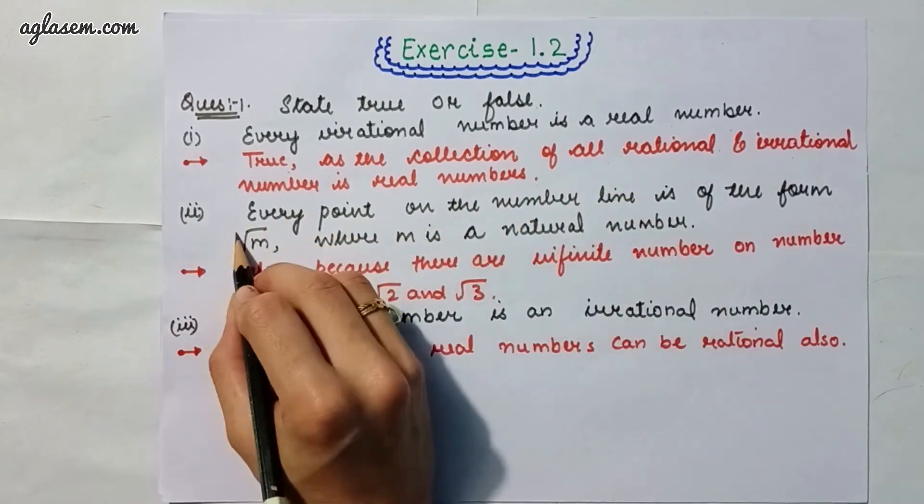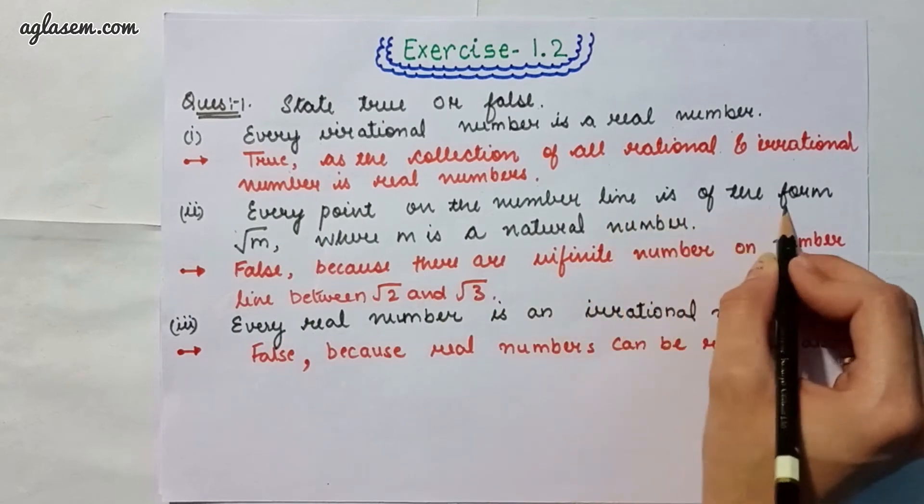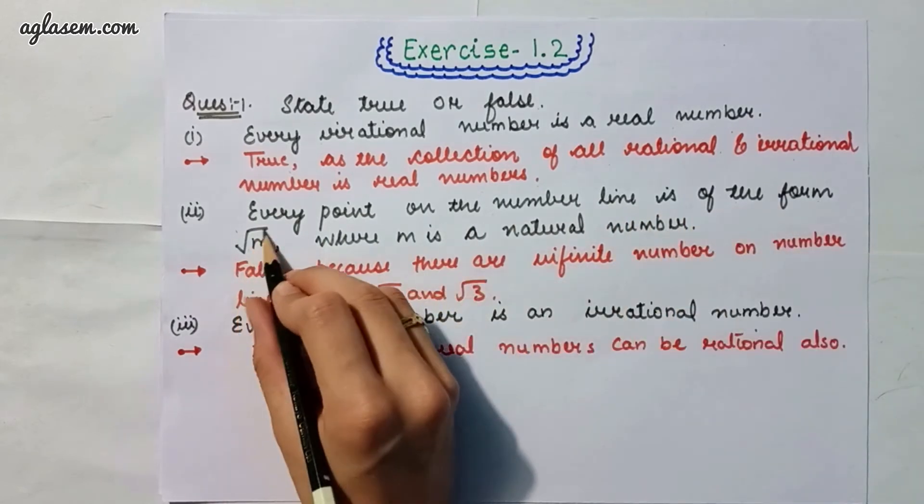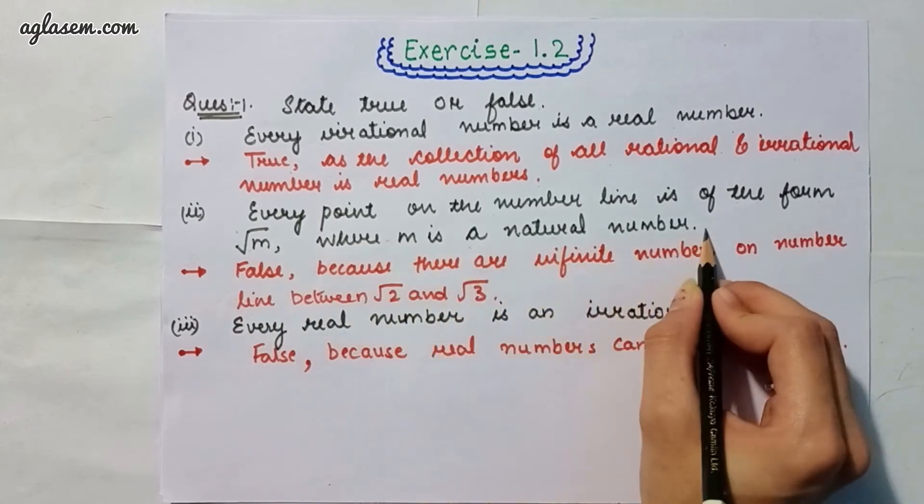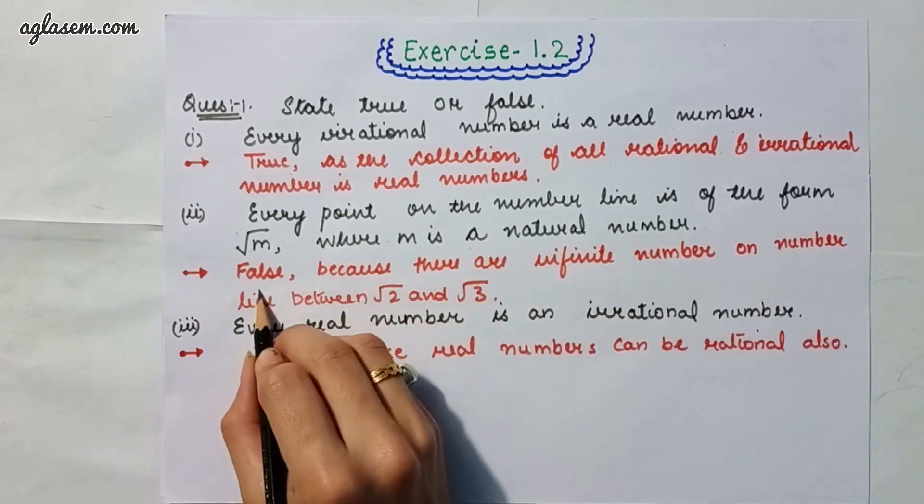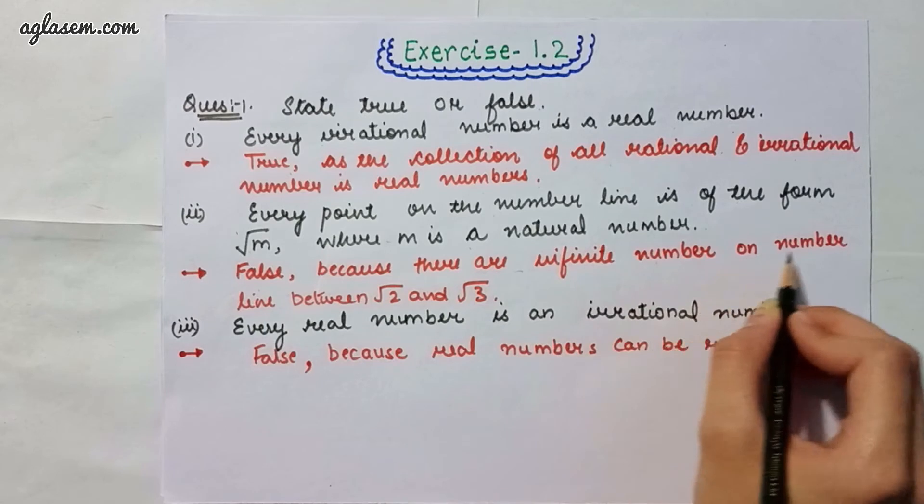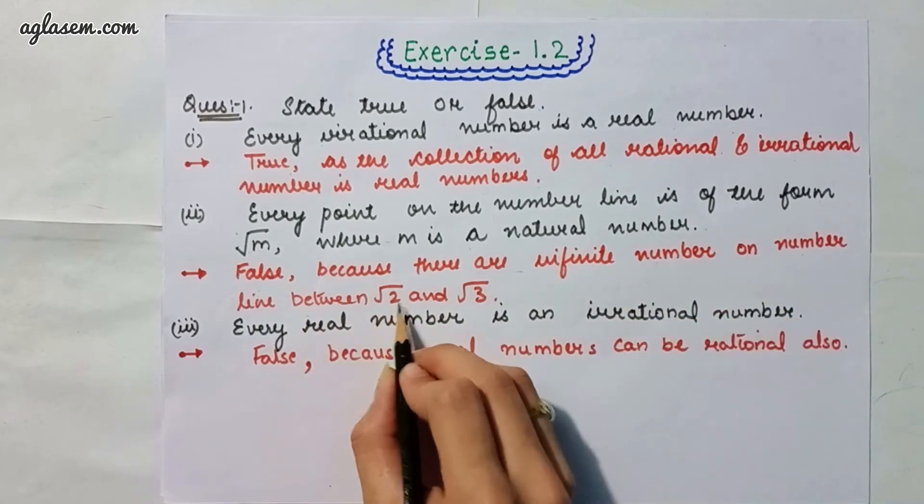Moving to the second part, which says every point on the number line is of the form root m where m is a natural number. The answer is false because there are infinite numbers on the number line between root 2 and root 3.